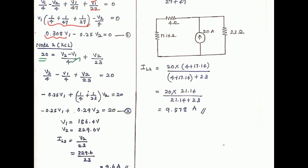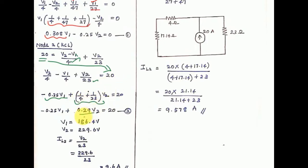Simplifying: for node 1, collecting V1 terms gives 0.308V1 - 0.25V2 = 0. For node 2: -0.25V1 + (1/4 + 1/23)V2 = 20. Solving the equation system: V1 = 186.4V and V2 = 229.6V.